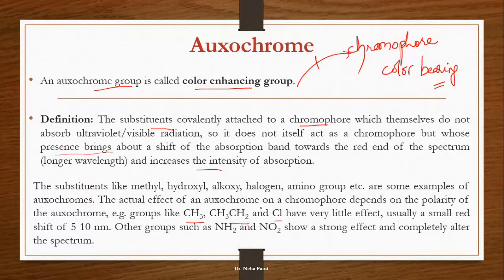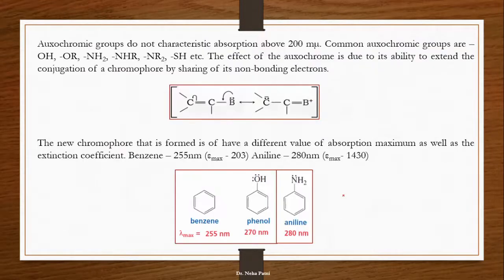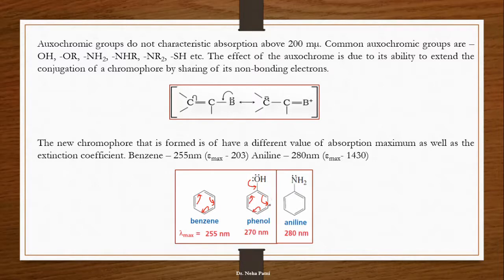These auxochromic groups, when present in a structure, usually change the wavelength by 5 to 10 nm. If a group helps increase conjugation, the molecule becomes more stabilized and the wavelength increases. For example, in benzene where resonance is already possible, the lone pairs in phenol further increase conjugation. Similarly with nitrogen in aniline — aniline has a darker color than benzene. So the auxochrome intensifies color by increasing conjugation.